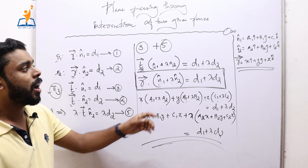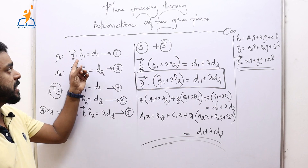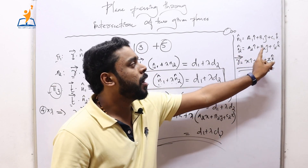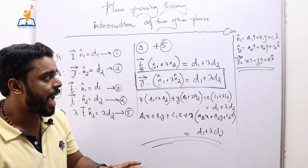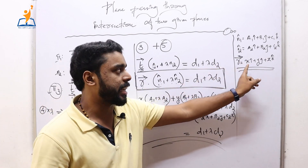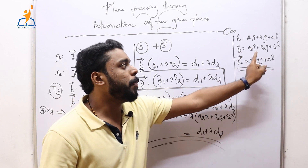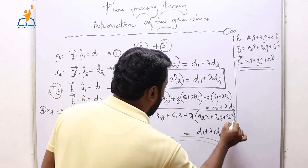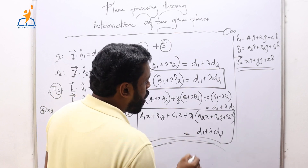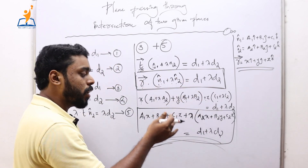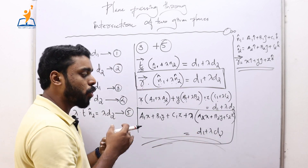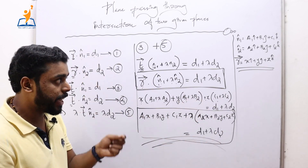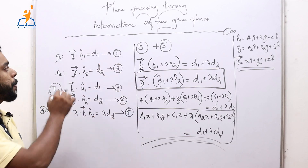Simplifying, the Cartesian equation becomes: (a1·x + b1·y + c1·z) + λ(a2·x + b2·y + c2·z) = d1 + λd2. This is the Cartesian equation of the plane in the intersection of planes π1 and π2. Remember that a1, b1, c1 and a2, b2, c2 are the components of the unit normal vectors, and d1, d2 are the perpendicular distances from the origin to the respective planes.